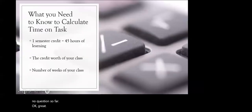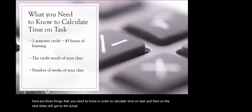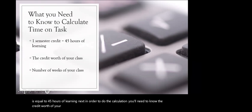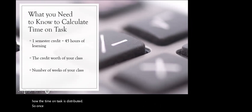Here are three things you need to know in order to calculate time on task. First, one semester credit is equal to 45 hours of learning. Next, you'll need to know the credit worth of your class — whether it's a one-credit, three-credit, or four-credit class. Finally, you need to know the number of weeks for your class, because that will make a huge difference in how the time on task is distributed. Once you know these three pieces of information, you can start doing the calculation.